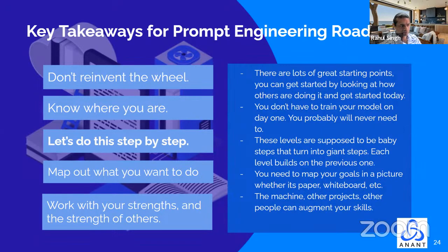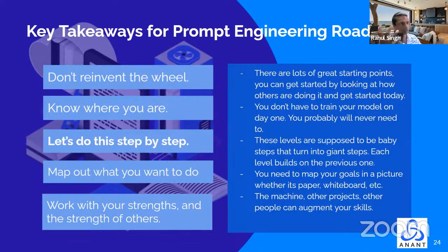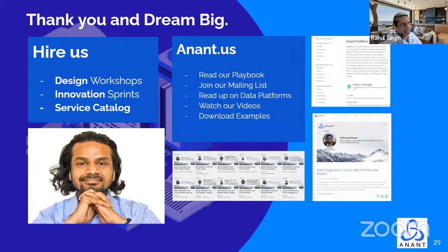Work with your strengths and the strengths of others. You may have certain skills, other people may have other skills, and GPT has other skills. Don't be afraid to ask other people for help or their input, or GPT for that matter. If you're a great prompt engineer and a great programmer, you may not necessarily be a great business process optimizer or business analyst. They may already know what the goal is, and they can tell you what they're trying to solve and you can take that and solve it. Thank you and dream big. You can check out the Kono.io blog where I'm blogging about this LLM journey. Thank you so much and until next time.